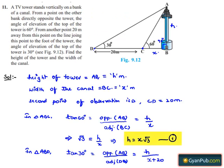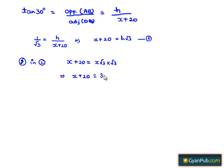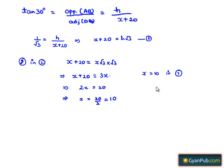From equation 1 we have h equals x root 3. Substituting in equation 2, x plus 20 equals x root 3 multiplied by root 3. That implies x plus 20 equals 3x. Sending x to the right hand side, we get 2x equals 20, which implies x equals 10. Substituting x equals 10 in equation 1, we get h equals 10 root 3.